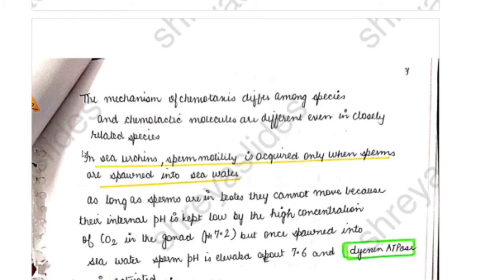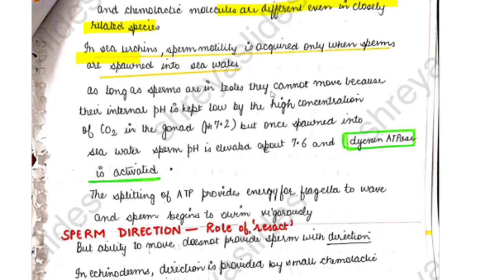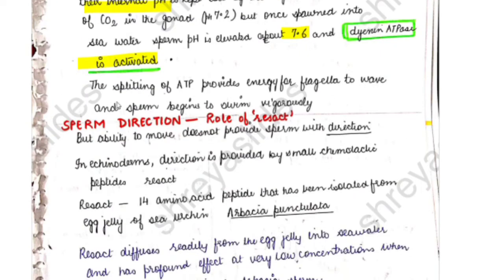The mechanism of chemotaxis differs among species. In sea urchin, sperm motility is acquired only when sperm are spawned into seawater. While in the testes, sperm cannot move because their internal pH is kept low (~7.2) by high carbon dioxide concentration in the gonad. Once spawned into seawater, sperm pH rises to about 7.6, the dynein ATPase is activated, ATP is split to provide energy for flagella to wave, and sperm begins to swim vigorously.